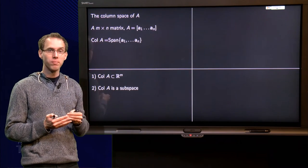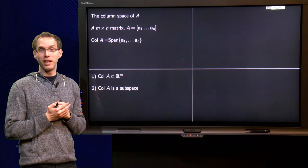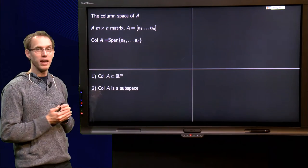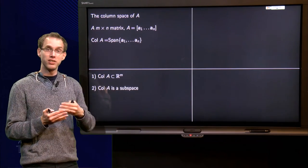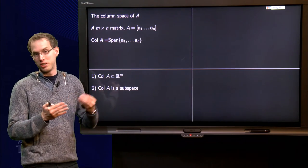So that is one. And the second thing we know straight away is that the column space of A is a subspace because it is a span. So in this case it is very easy to establish immediately that the column space is indeed a subspace just because it is a span.